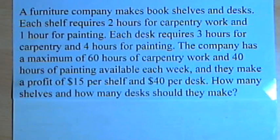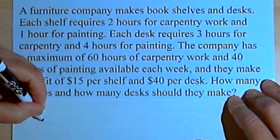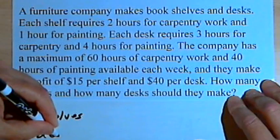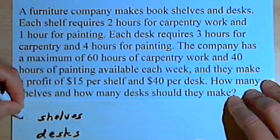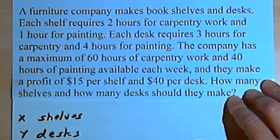There's a lot of information in here. To make it a little clearer, what I want to do is turn this information into a table. So we know we're dealing with shelves and desks. I'll make a row for shelves and a row for desks. And let's say the number of shelves is going to be x and the number of desks they make is y.